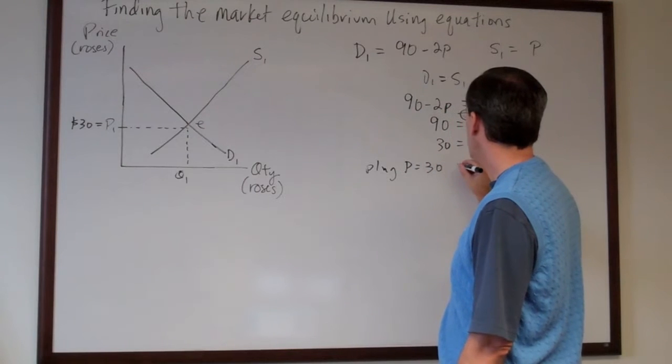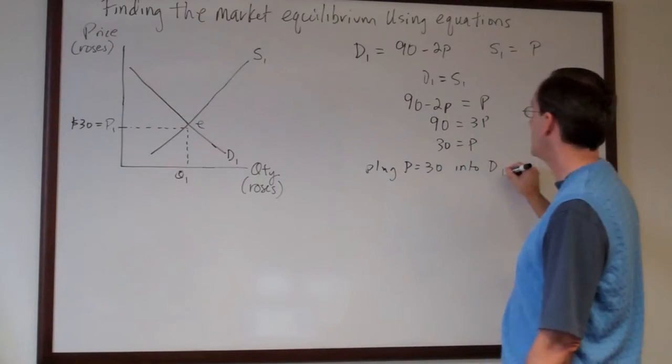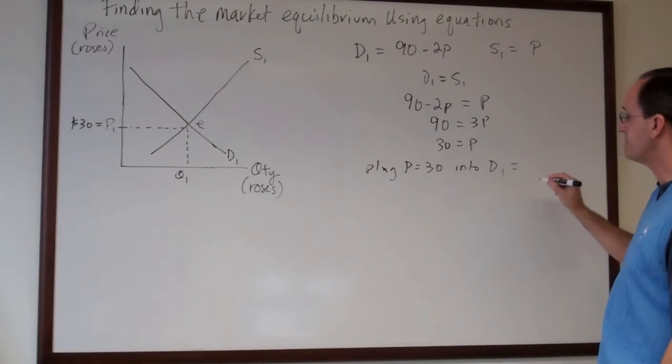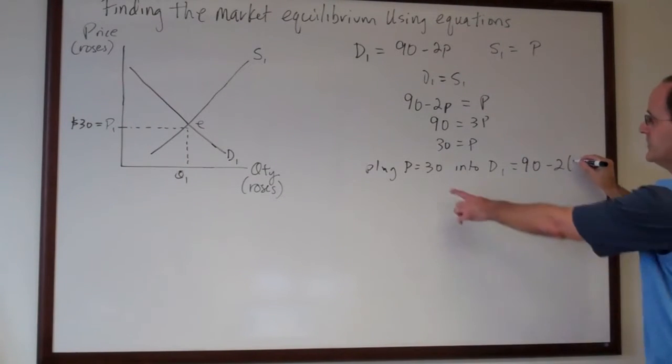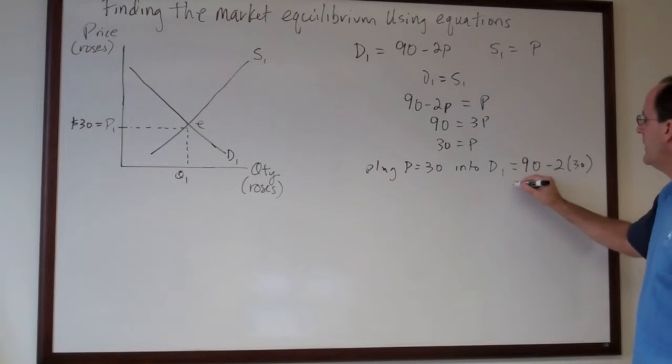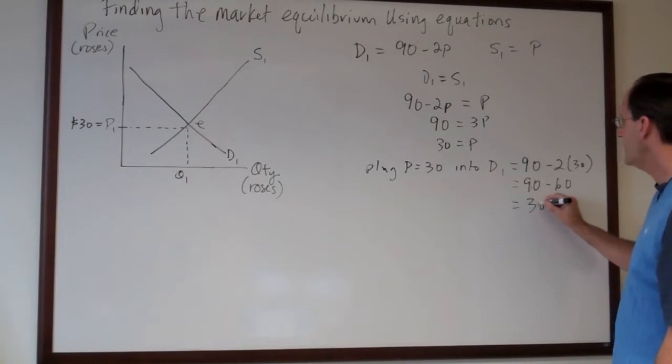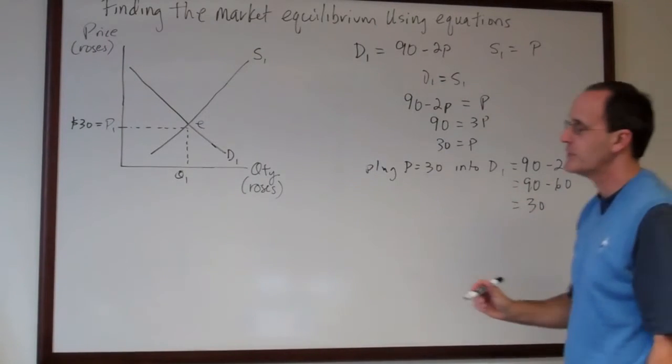P equals 30 into D1 and what we get is 90 minus 2 times 30 which is 90 minus 60 which is a quantity of 30. We'll put that in right here.